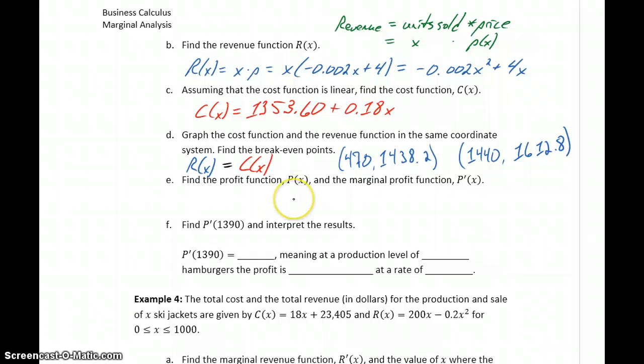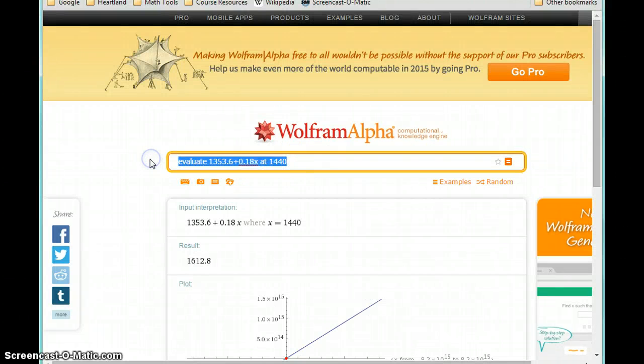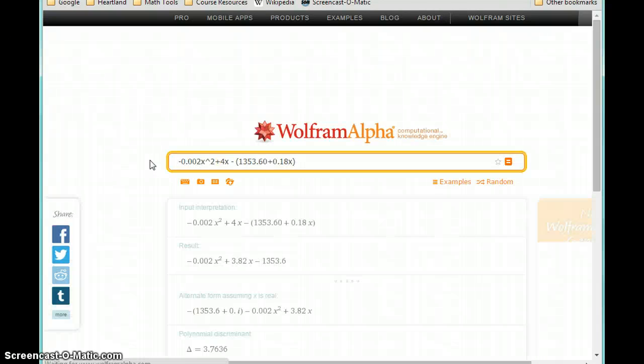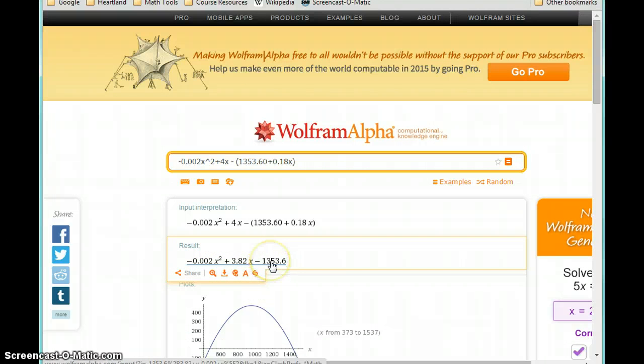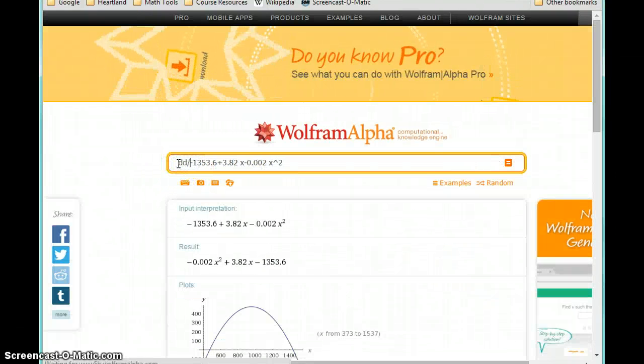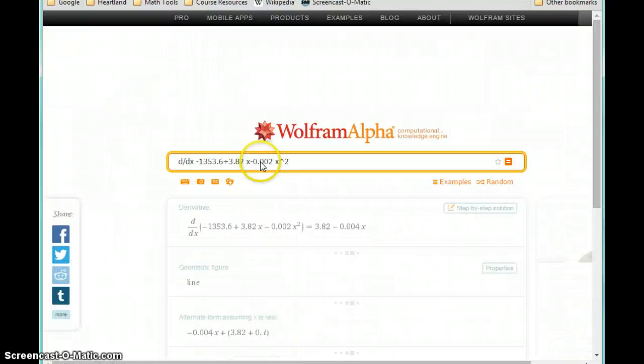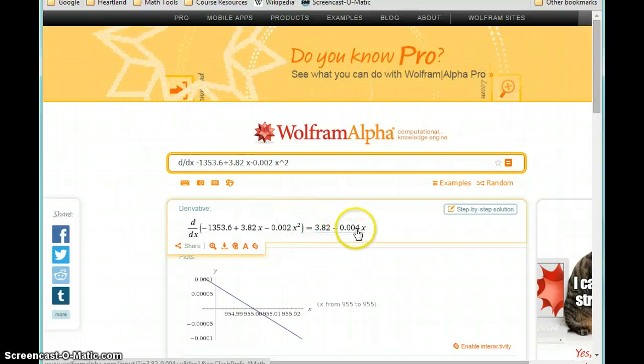In part E, we're asked to find the profit function and the marginal profit function. So profit is always your revenue minus your cost. So what we need to evaluate is our revenue function minus our cost function. Coming back to Wolfram Alpha, we could type in our revenue function and then subtract, and we'll put the entire cost function in parentheses to make sure we're subtracting that entire expression. So this would generate our profit function for us. So we want the profit function and then we also want the marginal profit function, which means we would want the derivative of our profit function, which in this case would be 3.82 minus 0.004X.